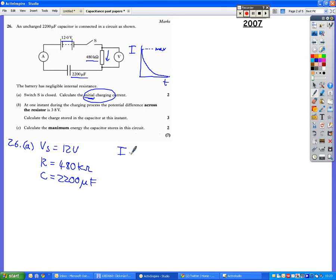So I is going to be equal to your supply voltage divided by your total resistance. There's only one resistor here, so you've only got one resistor to consider, so it's going to be 12 divided by 480, remember it's kiloohms, and that will give you 2 times 10 to the negative 5 amps.